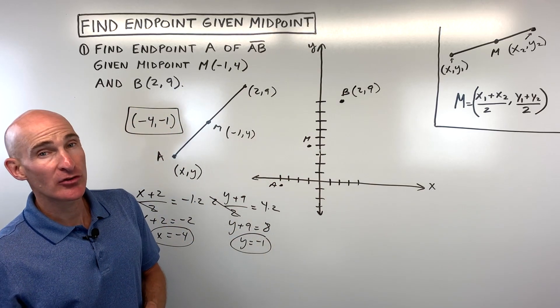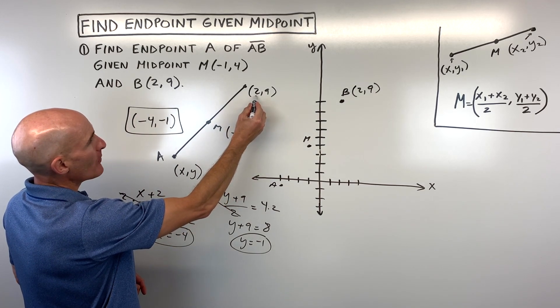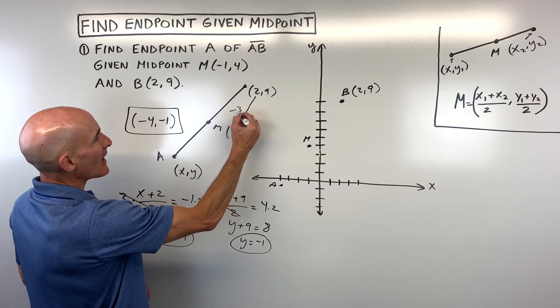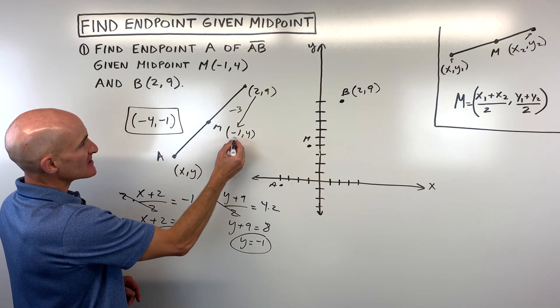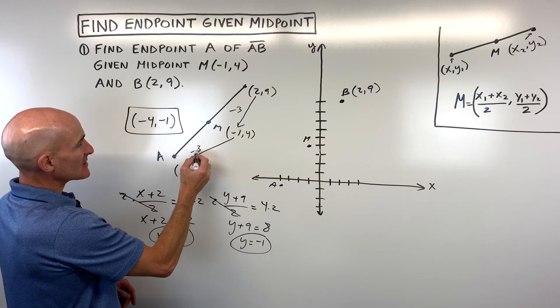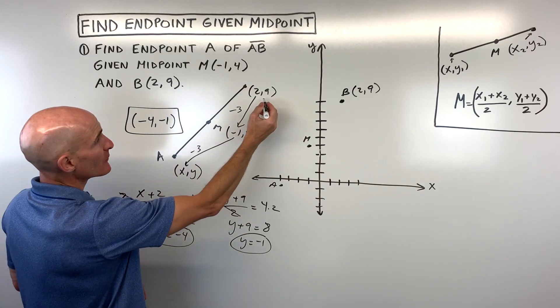Now I was telling you there's a shortcut method for doing this. Let me show you this. So what you would do is you'd say, how am I getting from two to negative one? Well, you can see I'm subtracting three. So if I do that same thing, if I subtract three again, negative one minus three gives us negative four.